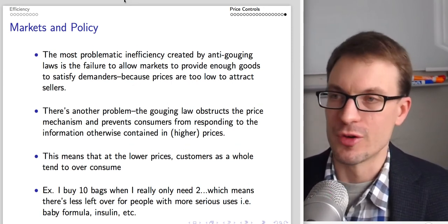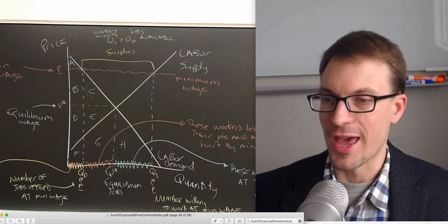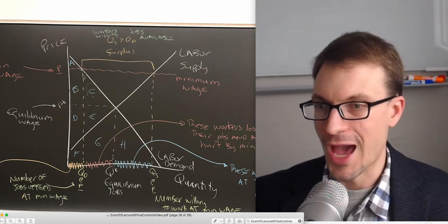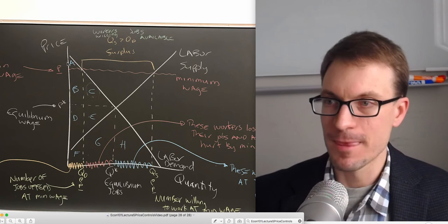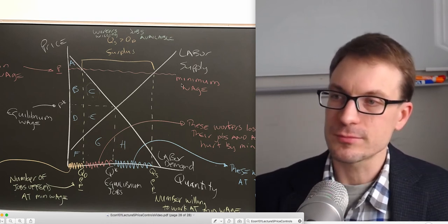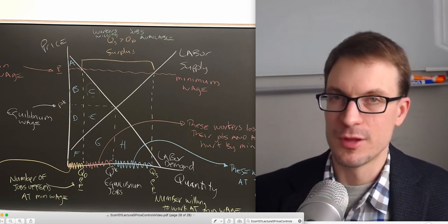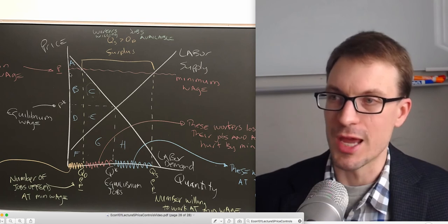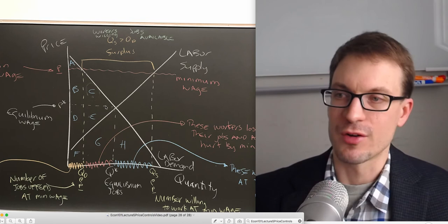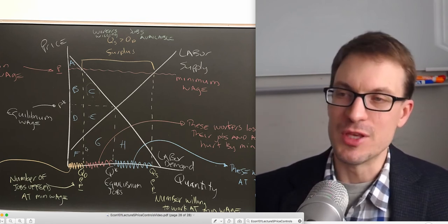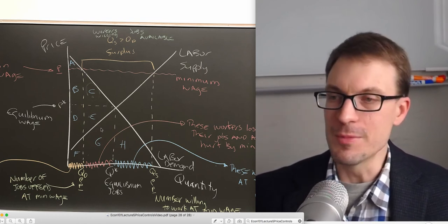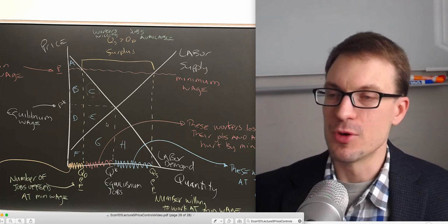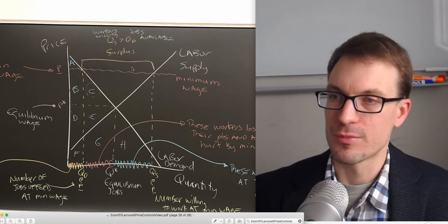Let's go back to the minimum wage with detailed drawings from the board. We have labor demand, labor supply, and a binding minimum wage above equilibrium. At the original equilibrium wage P*, consumer surplus to firms is area A+B+C; producer surplus to workers is D+E. Areas F and G are costs to suppliers — people's opportunity cost of their time. Area H is the opportunity cost of time for people not willing to work at P* but willing to work at the minimum wage P-lower-bar.